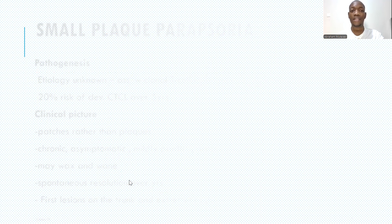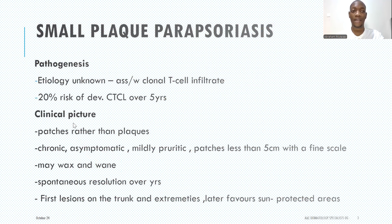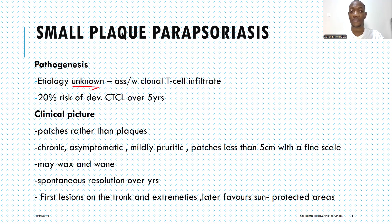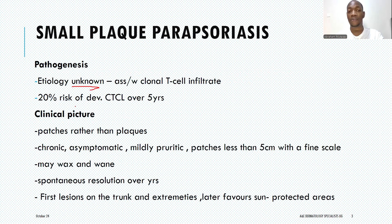The exact cause of small plaque parasoriasis is still not known. However, it has been associated with clonotypic T-cell infiltration and proliferation, and it carries a risk of developing cancer. About 20% of cases can develop cutaneous T-cell lymphoma over a course of about five years.